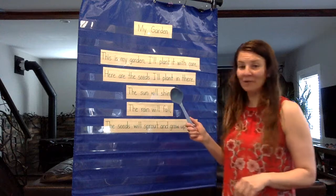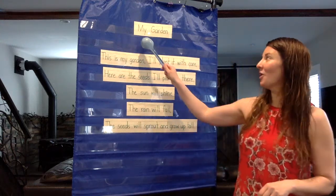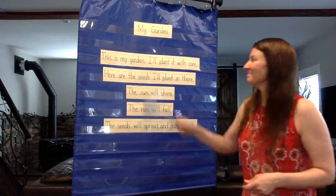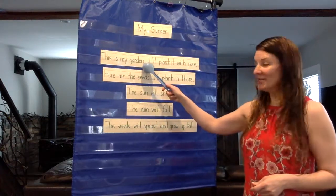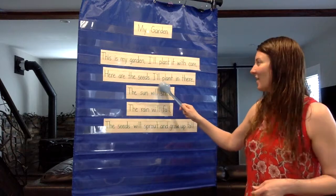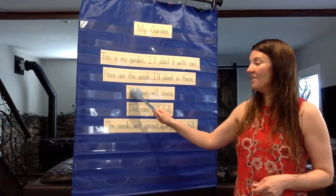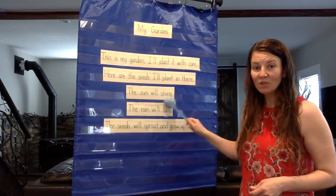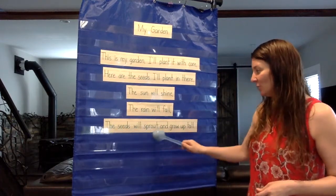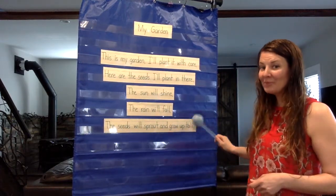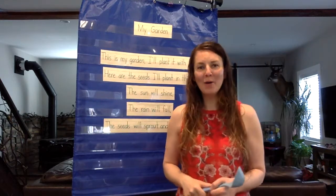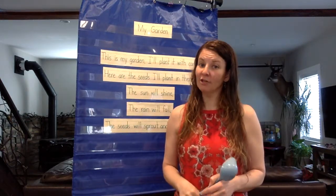We're going to start with our poem. This week's poem is called My Garden. 'This is my garden, I'll plant it with care. Here are the seeds I'll plant in there. The sun will shine, the rain will fall, the seeds will sprout and grow up tall.' That's a beautiful poem. I love gardens.